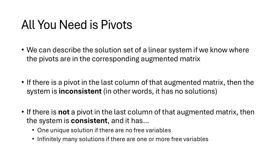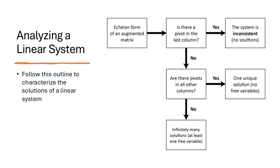If there's a pivot in the last column of the augmented matrix, then the system is inconsistent and has no solutions. If there's not a pivot in the last column, then the system is consistent with one or more solutions. There's only one unique solution if there are no free variables, and infinitely many solutions if there are one or more free variables. Here's a flowchart to follow: set up the augmented matrix and find its echelon form, then check the last column for a pivot. If there is one, the system is inconsistent. If not, check whether all other columns have pivots — if yes, one unique solution; if any other column lacks a pivot, infinitely many solutions.